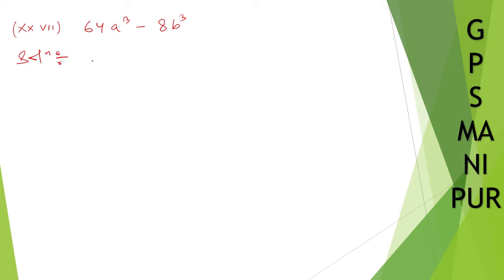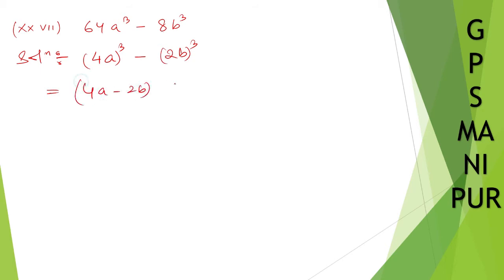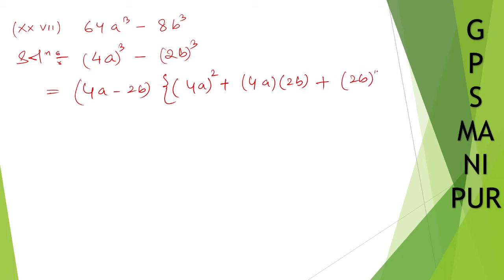For the solution: 64A cubed I can write as (4A) whole cube, minus 8B cubed I can write as (2B) whole cube. So this is A cubed minus B cubed form, which equals (A minus B)(A squared plus AB plus B squared). Here AB will be 4A into 2B, and B squared is (2B) whole square.